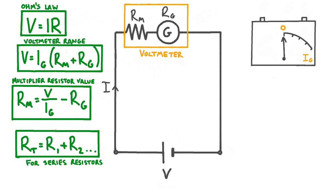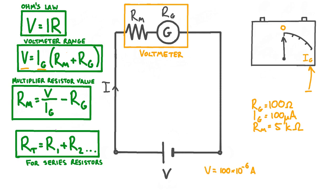The other issue we need to address is that at the moment the galvanometer measures current. However, we've shown that if our galvanometer has a maximum deflection current Ig, then the voltmeter we build using this galvanometer will have a maximum deflection voltage V. We can use the expression V equals Ig times (Rm plus Rg) to calculate the value of V to write in place of Ig on the galvanometer's dial. For example, if we were using a galvanometer with a resistance Rg of 100 ohms and a full deflection current Ig of 100 microamps, and a multiplier resistor of 5 kilohms, then the range of our voltmeter V would be 100×10⁻⁶ amps times (5000 plus 100) ohms, which works out at 0.51 volts. This value is then written at the maximum deflection position on the voltmeter's dial.